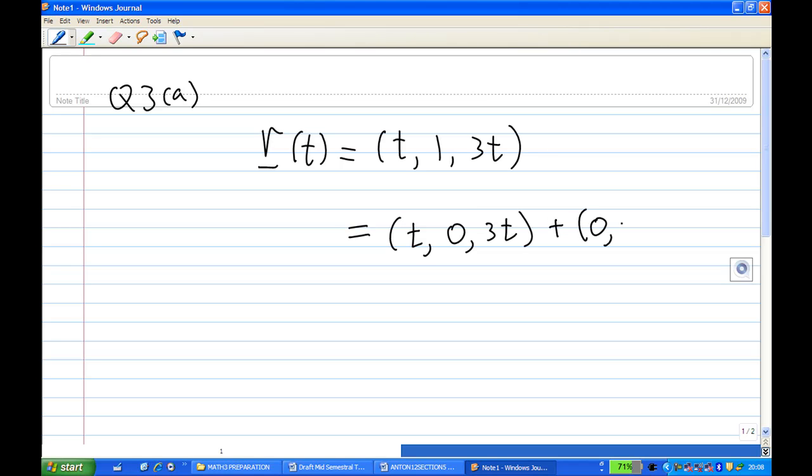The term without t is (0, 1, 0), and the term with t is (t, 0, 3t). So this is equal to (0, 1, 0) + (t, 0, 3t).